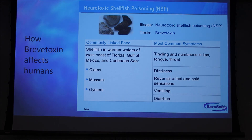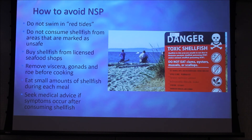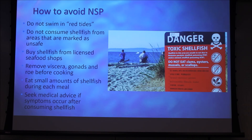Neurotoxic shellfish poisoning in humans occurs when people eat clams, mussels, and oysters without knowing if they came from a red tide area. Symptoms include tingling, numbness, and dizziness within 30 minutes of eating. To avoid toxic shellfish poisoning: do not swim in red tides; do not consume shellfish from affected areas; do not go fishing where signs warn of danger; buy shellfish only from licensed seafood shops; remove the viscera, gonads, and roe before cooking; eat only small amounts, as even a single oyster can contain enough toxin to kill an adult human; and seek medical advice if symptoms occur after consuming shellfish.